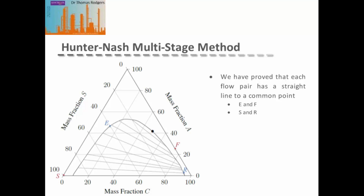We have proved that each flow pair has a straight line passing between them to a common point. Therefore, as we know our compositions of the extract and feed, we can draw our first straight line — the red line — and as we also know the compositions of our solvent and raffinate, we can draw a second line — the blue line. Where these two lines meet is our operating point for the whole liquid-liquid multi-stage extraction system.